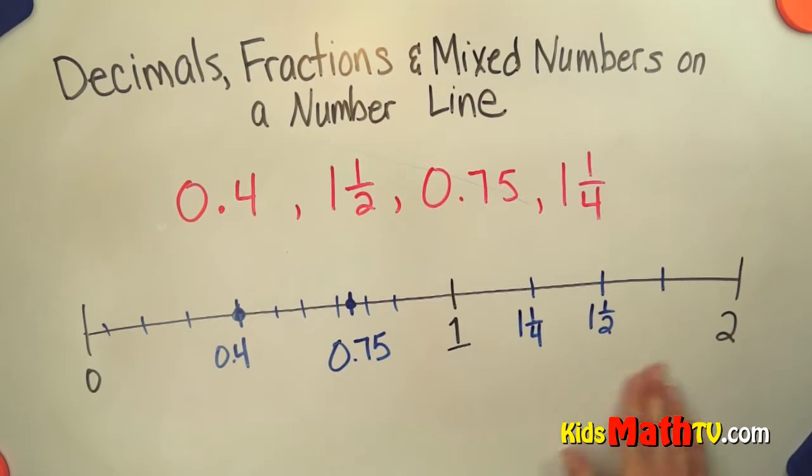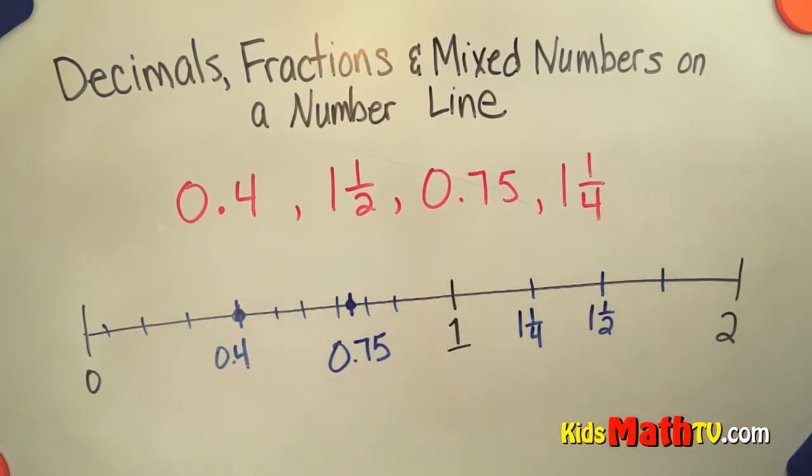And so we have them actually ordered in order now. 4 tenths is the smallest. 75 hundredths is the next largest. 1 and ¼ is the next largest. And 1 and ½ is the largest number. So going in order, these are all plotted on a number line.